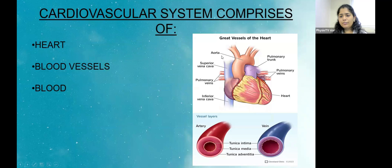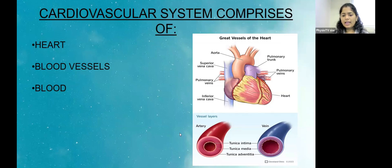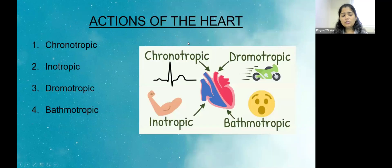The cardiovascular system comprises the heart, blood vessels, and the blood. There are four actions of the heart which are chronotropic, dromotropic, inotropic, and bathmotropic. Chronotropic basically deals with the heart rate.